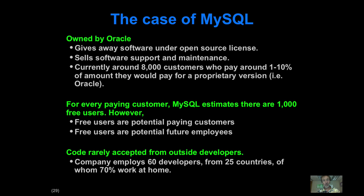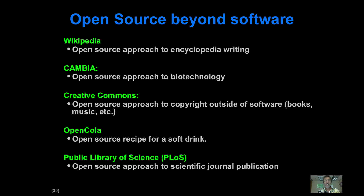You might ask: how can you make money off of something you're giving away? There are well-known examples. MySQL is a great example — it's owned by Oracle, who still support it actively despite having their own proprietary software. They have about 8,000 customers who pay a fraction of what they'd pay for Oracle's proprietary version, plus many free users. Oracle believes this is a good business model because people start using it for free, and eventually need professional support, then enter into a service agreement. Open source has also spread beyond the code community — from Wikipedia to biotechnology to Coca-Cola, there are open source versions.